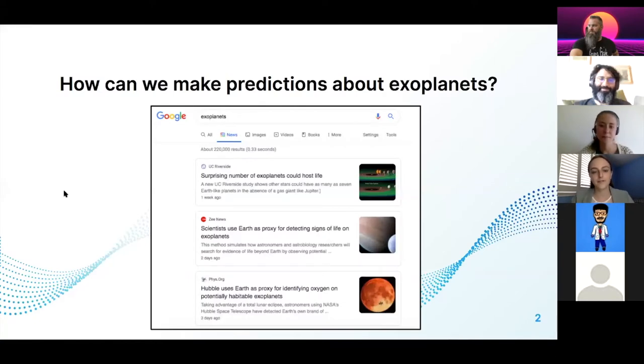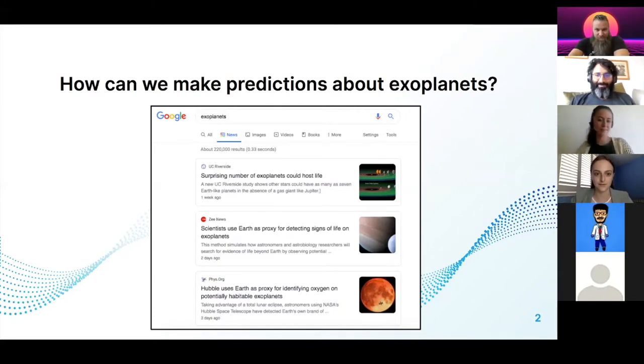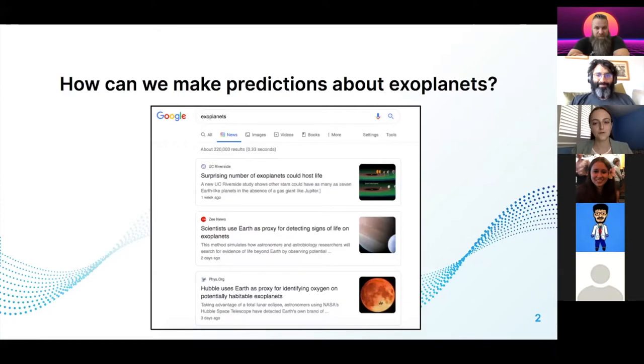So you're curious about exoplanets—planets that are outside of our solar system. You do a quick Google search and read that a surprising number of exoplanets could host life. But the skeptic in you says, wait, how can we make predictions about exoplanets without being able to visit them or with such limited information about them?